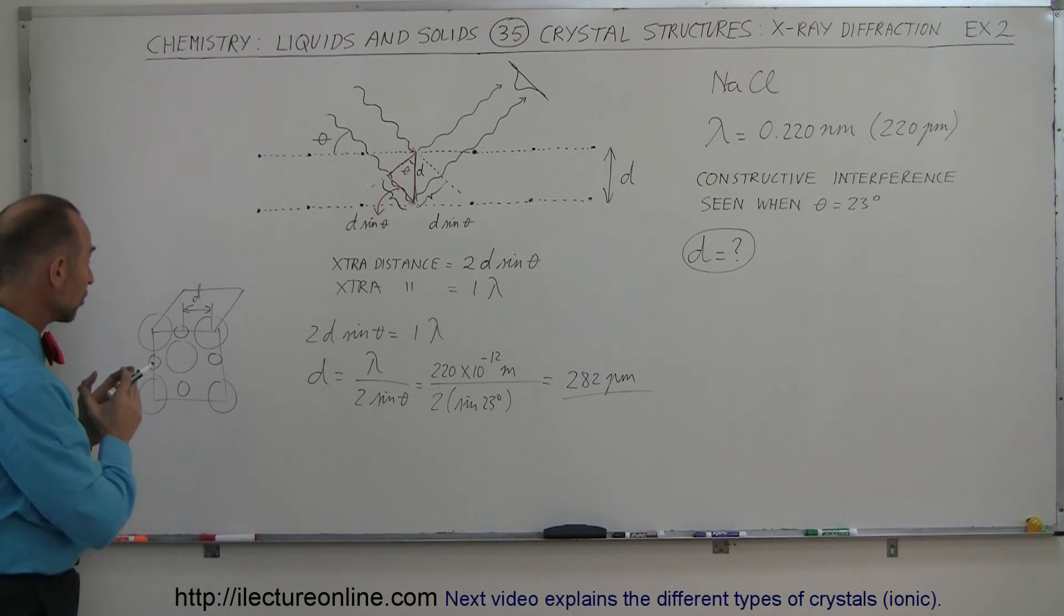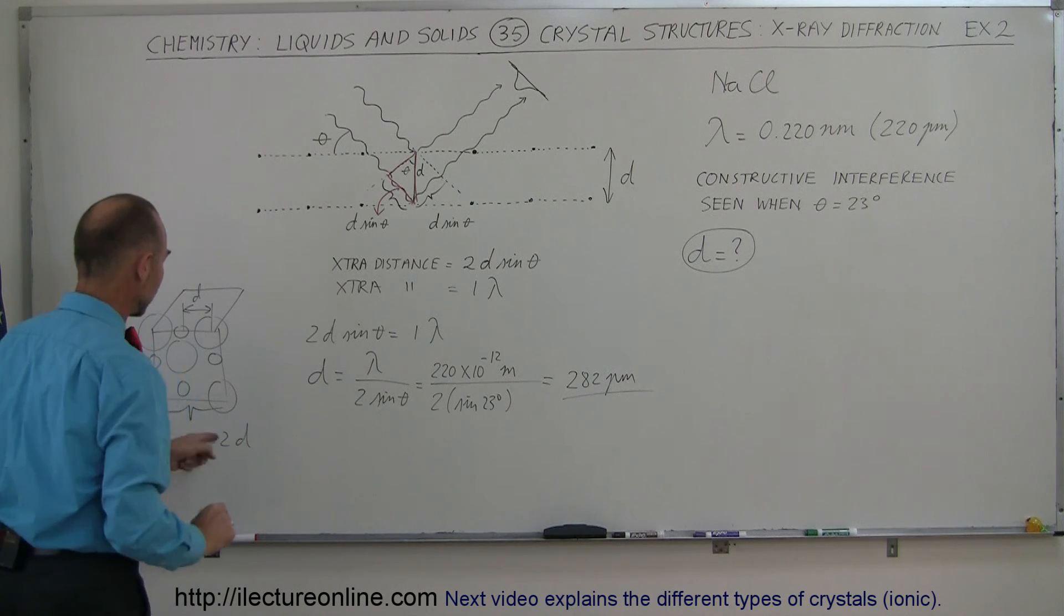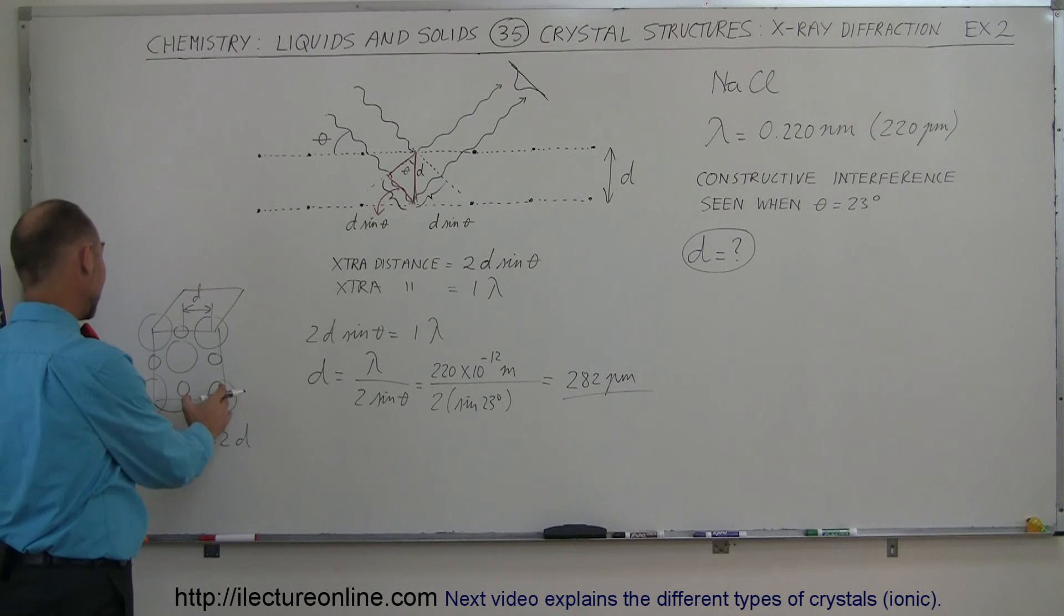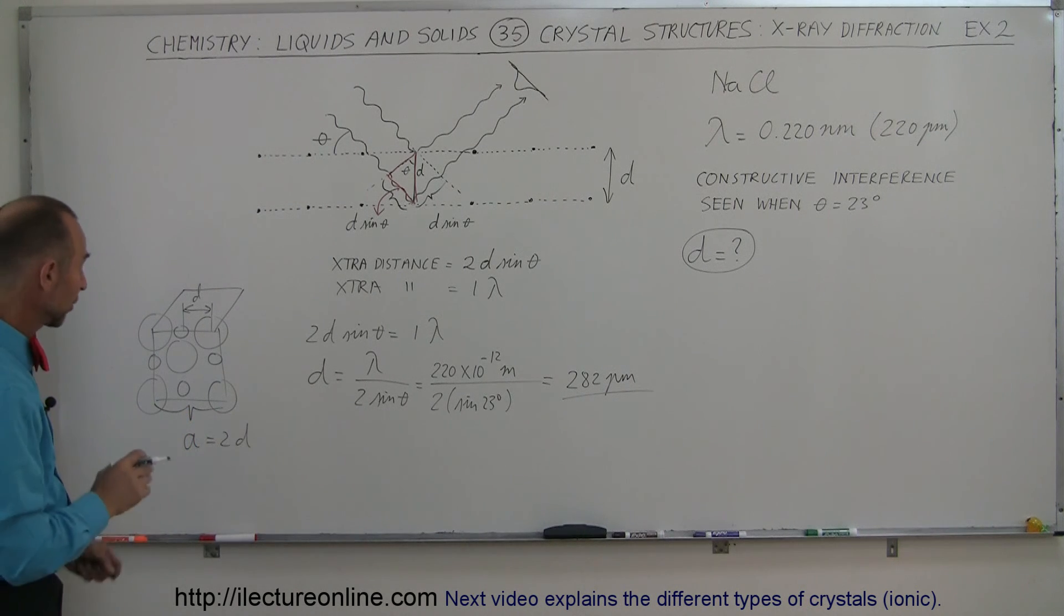Notice that the unit cell structure is such that the distance from the center of one chlorine ion to the center of the next chlorine ion is A, which is equal to 2 times the separation distance we just found. If we double that number, we get 564, which is indeed the size of a unit cell of a sodium chloride crystal structure.